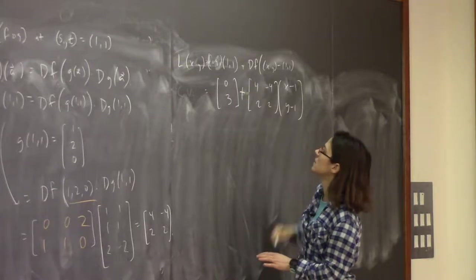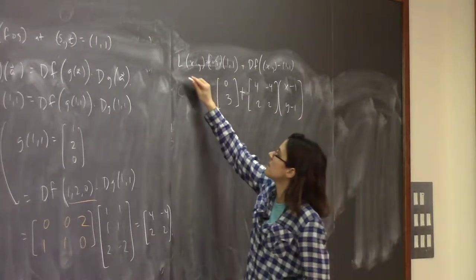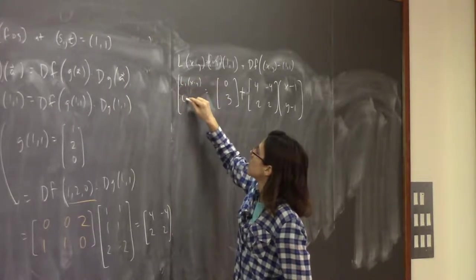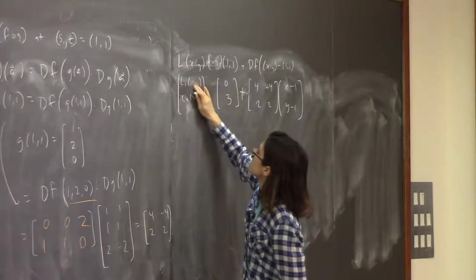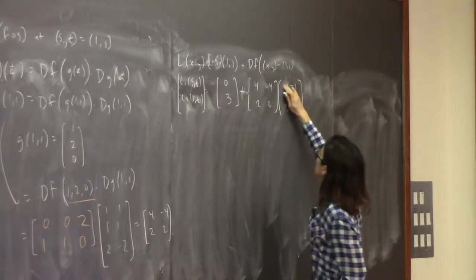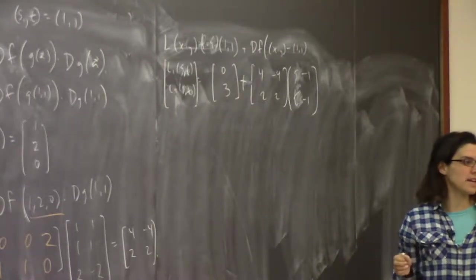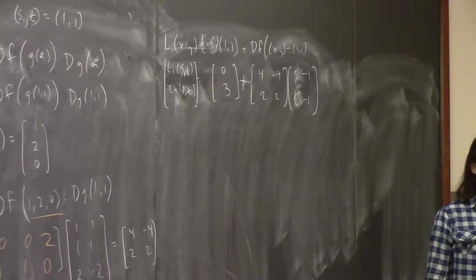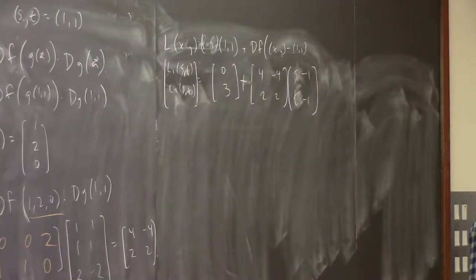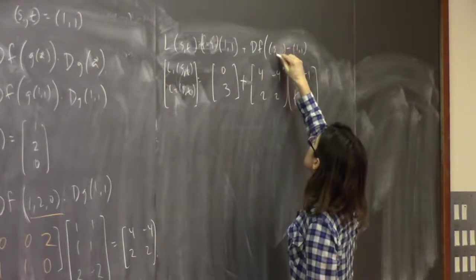So the linearization is (0,3) plus [[4,−4],[2,2]]·(s−1, t−1), giving coordinates L₁(s,t) and L₂(s,t). This tells you what each coordinate does as a function of s and t. If your point (s,t) is close to (1,1), the value is about (0,3), but it changes by this linear amount. Note: I'm using s and t to be consistent with our previous notation.